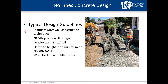Design guidelines use standard SRW wall installation techniques. Stability design is based on the NCMA Design Manual for Segmental Retaining Walls for sliding and overturning. Typically, no fines concrete design is used in gravity walls between three and eleven feet tall. Walls below three feet are generally considered gravity block walls, and above eleven feet the economics typically don't work out. The typical depth-to-height ratio is around 0.4H, depending on loading conditions and soil type. All backfill should be wrapped with filter fabric to prevent fine migration into the no fines backfill.